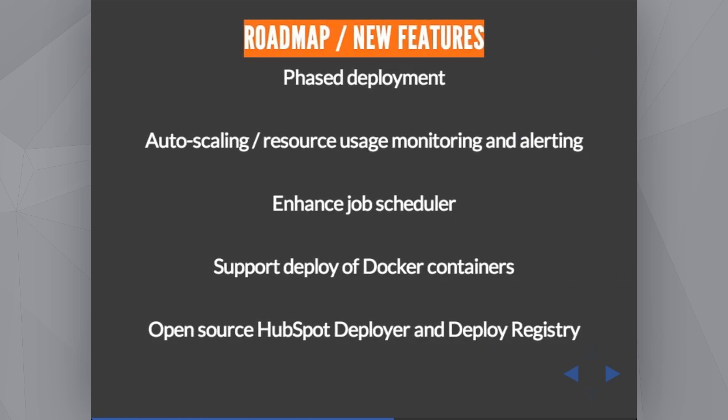And this is the roadmap. We are going to provide phased deployment so we can deploy in stages — we cannot do it now. We want to support auto-scaling and monitoring of resources. We will support Docker, of course. And another thing we would like very much to do is open-source the upper deploy layers I have already demonstrated, making it even easier to use Singularity in your pipeline.